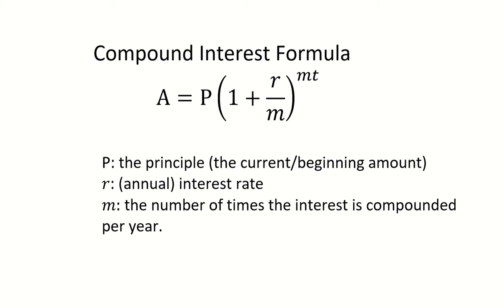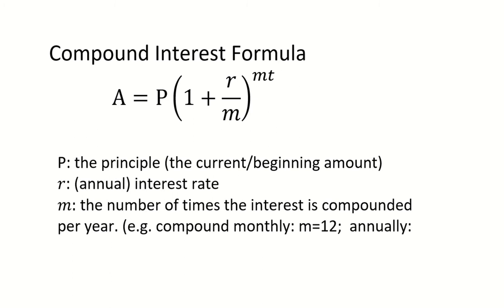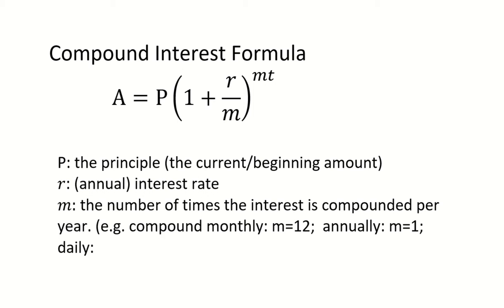M represents the number of times the interest is compounded per year. For example, if your interest is compounded monthly, then M is equal to 12 because your interest will be compounded 12 times a year, one time for each month. If your interest is compounded annually, then the M is 1. If your interest is compounded daily, then your M is 365 because your interest will be compounded 365 times per year.